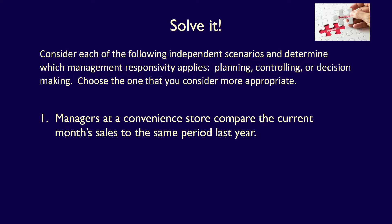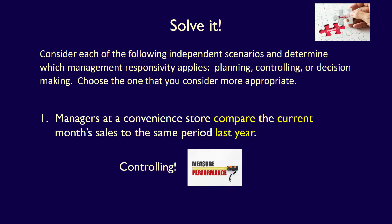Scenario 1: Managers at a convenience store compare the current month's sales to the same period last year. Comparing this year to last year is a performance measurement which provides feedback. This will allow management to make adjustments moving forward, and therefore it's controlling.